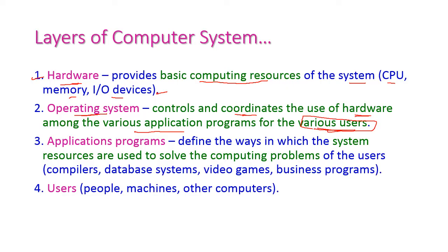The third layer is for application programs, which defines the way in which system resources are used to solve computing problems for users. Based on the user's requirement we can install our own application programs. The last layer is for users. Users can be people, machines, or other computers — any person who utilizes the computer is called a user. So we have four layers: hardware, operating system, application programs, and users.